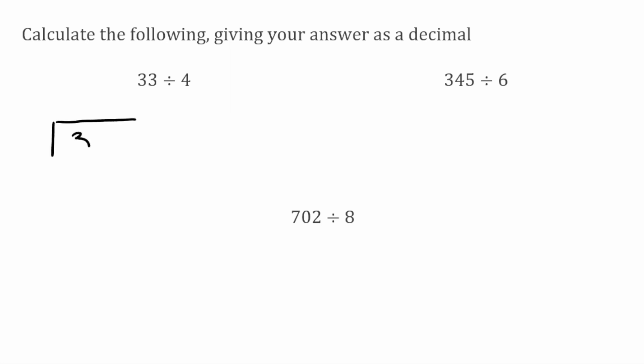For this first question we've got 33 divided by 4. To begin with, how many times does 4 fit into 3? Well it doesn't, so I'm just going to carry that 3 over to the next digit. How many times will 4 fit into 33? Well that'll go 8 times, because 8 times 4 is 32, that's going to leave us a remainder of 1. So because we've reached our last digit, we're going to extend our line, put a decimal in the answer, a decimal after our 33, and we're just going to write some zeros. We had 8 times 4 which is 32, that left us with a remainder of 1, so that's what I'm going to carry over.